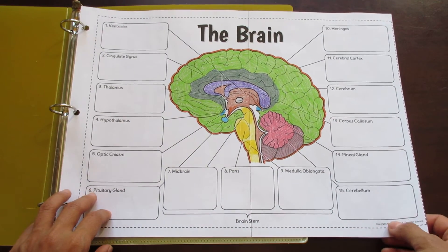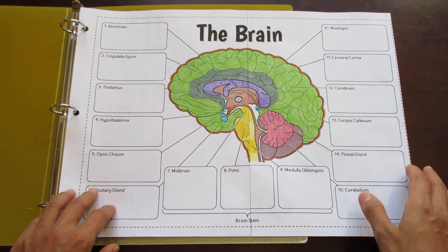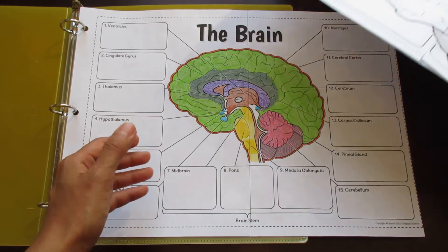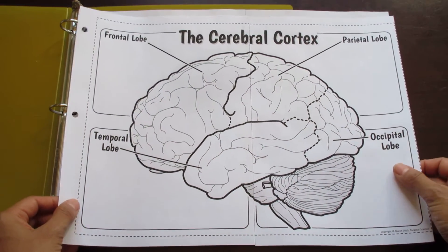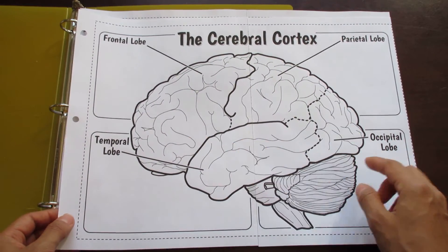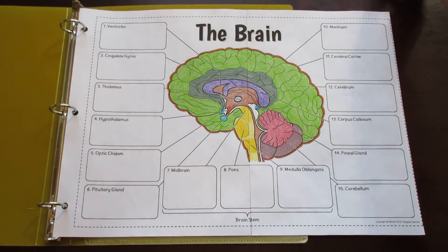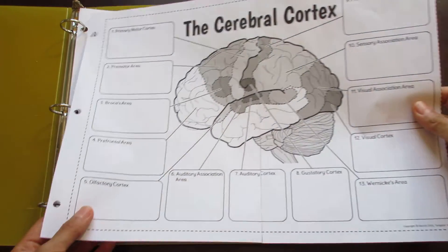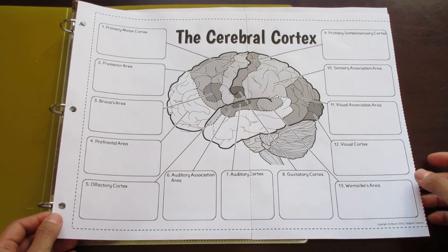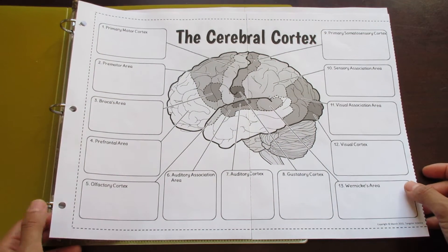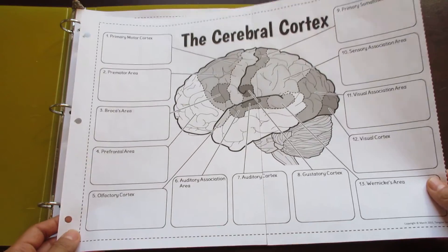This particular one is the cross-section of the brain where you can see the inside structures. I also have, along with this product, this foldable which is the four lobes. And on top of that, I also have the different sections of the cerebral cortex: Broca's area, Wernicke's area, the primary somatosensory cortex. All of that is on this one.